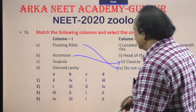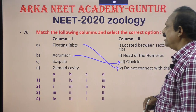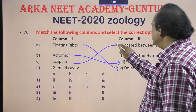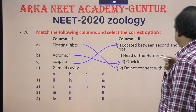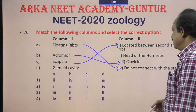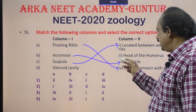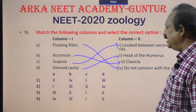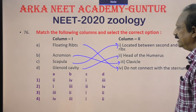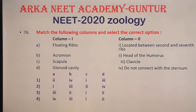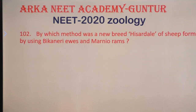The acromion process is attached to the clavicle. The scapula is present on the dorsal side between the second to the seventh rib. The glenoid cavity is where the head of the humerus fits in. This is the correct matching, and the fourth option is the correct one.